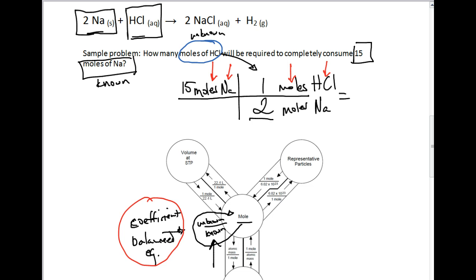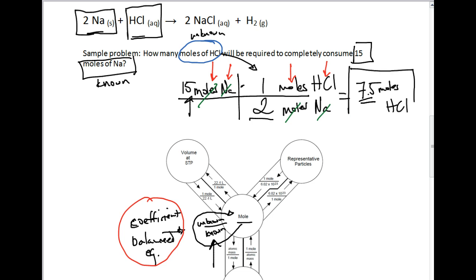We cancel units: moles of Na cancels with moles of Na. We multiply 15 times 1 to get 15, then divide by 2 to get 7.5 moles of HCl. Both 15 and 7.5 are 2 significant figures. So if we had 15 moles of sodium, it would take half the amount of HCl to consume it all — because of the balanced equation, it's a 1-to-2 ratio. That is how we do the most basic level of stoichiometry: a moles-to-moles problem.